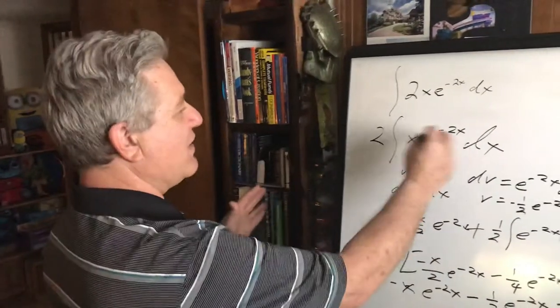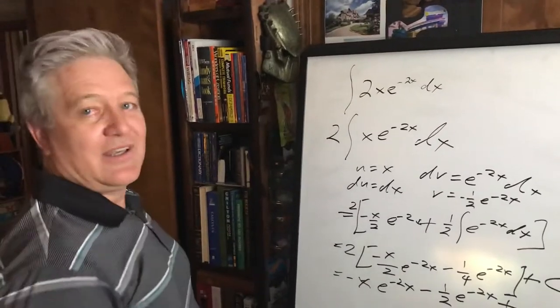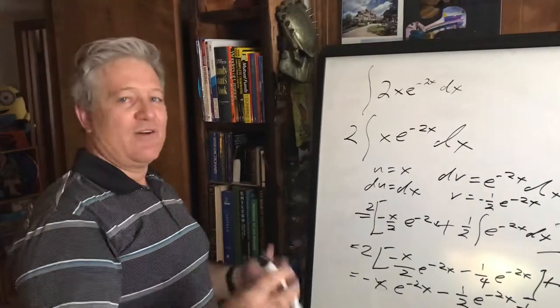This is a common mistake people make. They forget about the 2 because they get so focused on trying to find the answer to this x e to the negative 2x, and they may get maybe a point or two counted off on their exam.